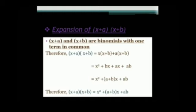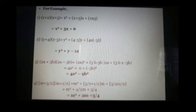Now just look at the middle terms. What is the middle term? bx + ax. There is a common variable — x. So x(b + a) can be written with x outside the bracket. So the solution of (x + a)(x + b) is equal to x² + (a + b)x + ab.